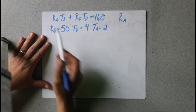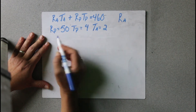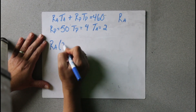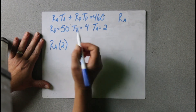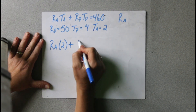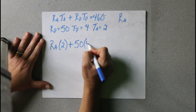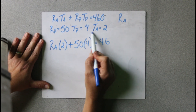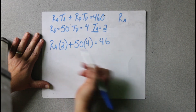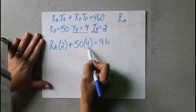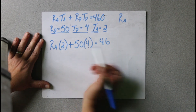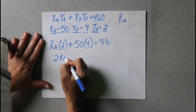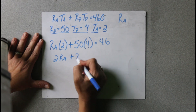All we're going to do is substitute in values. RA — we don't know that one, so we leave it. TA is 2. So RA times 2, plus RP which is 50, times TP which is 4, equals 460. All I did was substitute in the values. When I got to TA, I wrote 2; TP, I wrote 4; RP, I wrote 50. Now we just multiply: RA times 2 is 2RA, plus 50 times 4 is 200, equals 460.